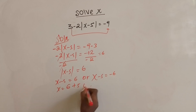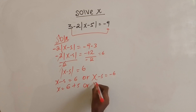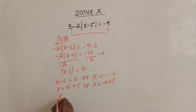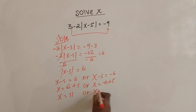Therefore, x equals 6 plus 5, or x equals negative 6 plus 5. So either x equals 11, or x equals negative 1. The answer for this absolute value equation is x = 11 or x = -1. That's all — thank you for watching, bye bye!